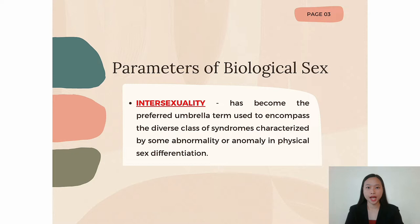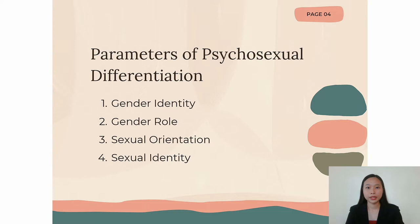Under the parameters of biological sex, we have intersexuality, which is the preferred umbrella term used to encompass a diverse class of syndromes characterized by some abnormality or anomaly in physical sex differentiation. In short, it is the state where a person has sexual characteristics associated with both sexes. For example, a person may be born with both female and male genitalia.